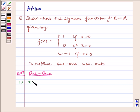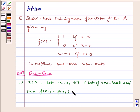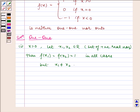First, for x greater than 0, let x₁, x₂ belong to R, the set of positive real numbers. Then f(x₁) equals f(x₂) equals 1 in all cases, but x₁ is not equal to x₂. Thus f is not one-to-one.